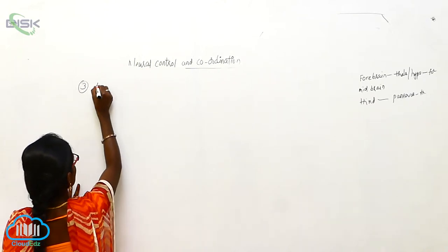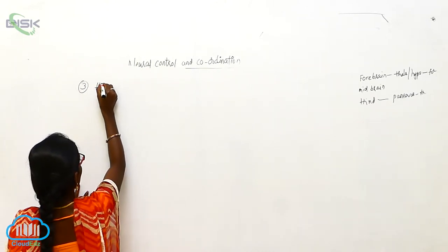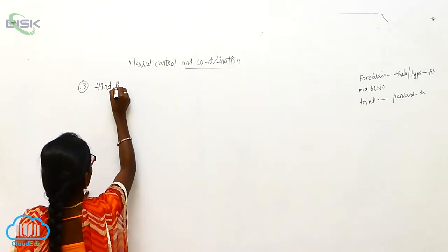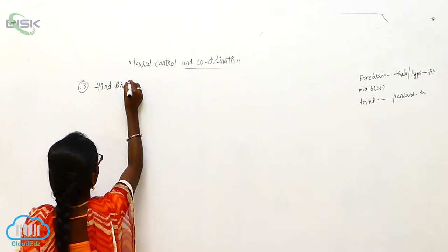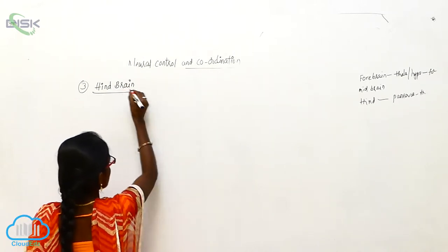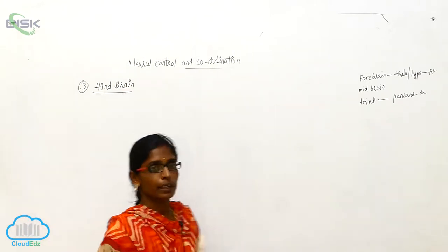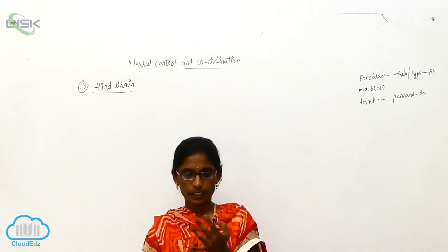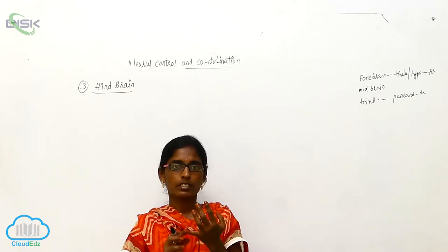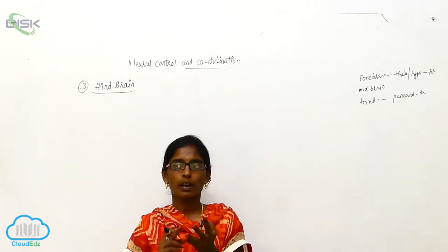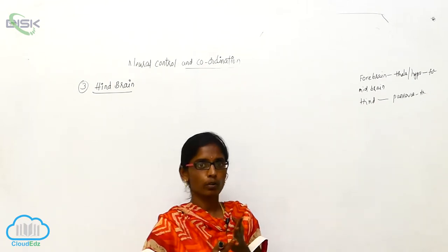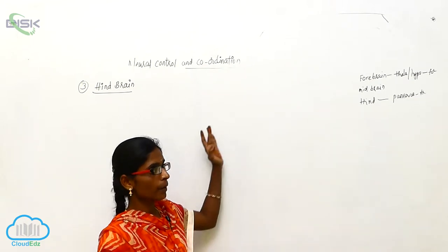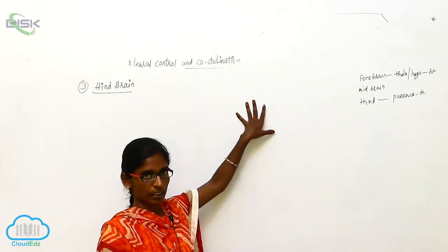The third one is the hindbrain. The hindbrain divides into three parts: the cerebellum, pons varoli, and medulla oblongata.